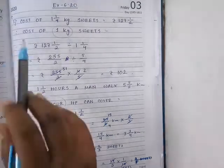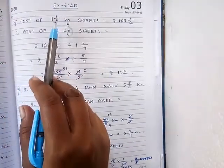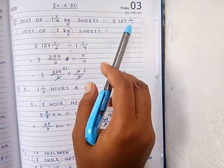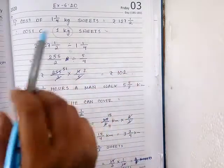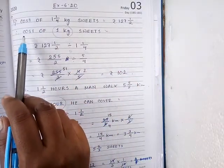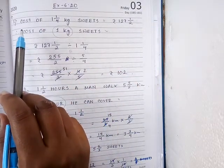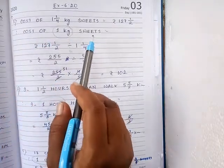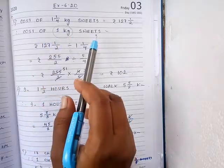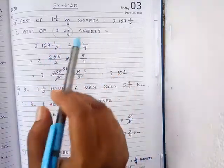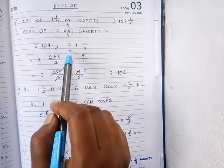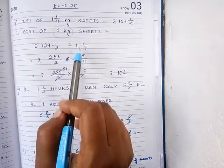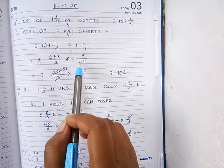Question number 1. The cost of 1 whole number 1/4 kg sweets is equal to rupees 127 whole number 1/2. Our question is: what is the cost of 1 kg sweets? We are finding the cost of 1 kg sweets. When finding the cost of 1 kg sweets, we will divide. First, write down the cost divided by the quantity. Since both are in mixed fraction, first transform them to improper fractions.